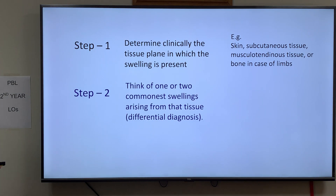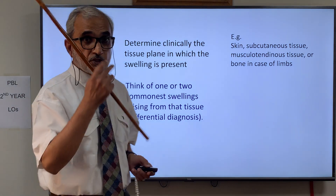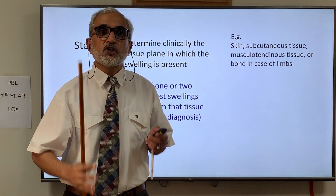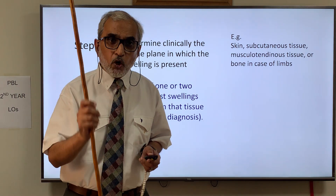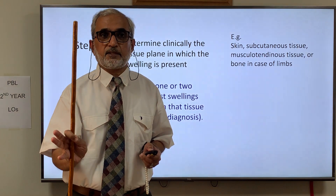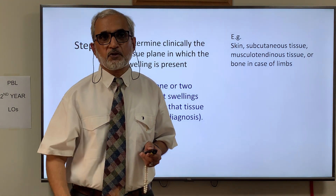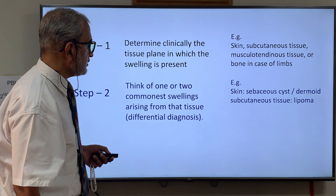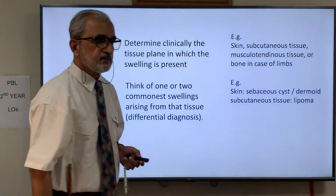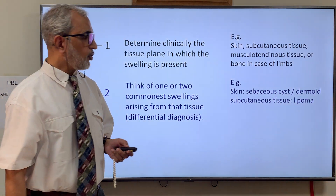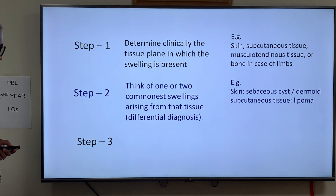Step two is to think of one or two common swellings arising from this tissue — that will constitute a differential diagnosis. Please do not think of a large number of diseases in differential diagnosis; think of the most common one or two swellings. By this you are going to help 98% of cases. For example, in skin the common swellings are sebaceous cyst or dermoid; in subcutaneous tissue the common swelling is lipoma.